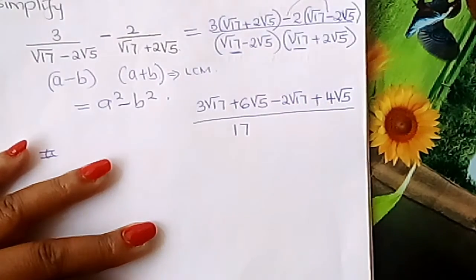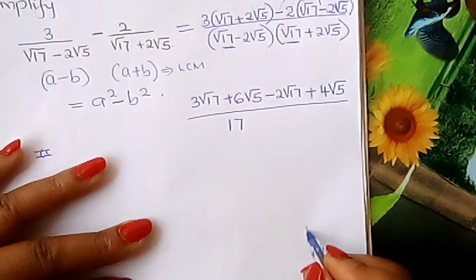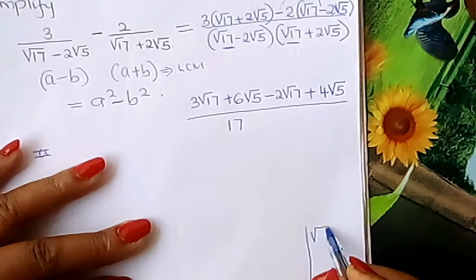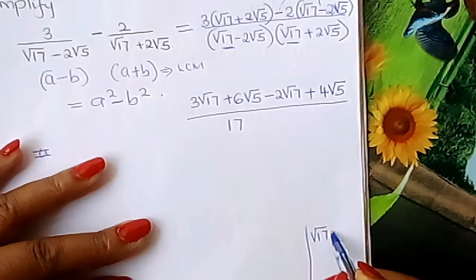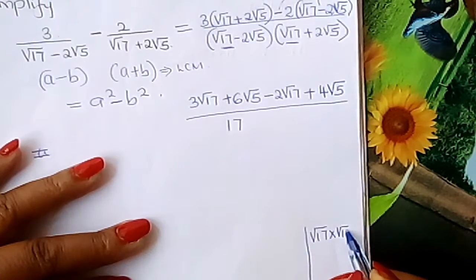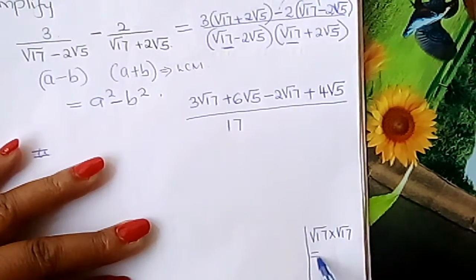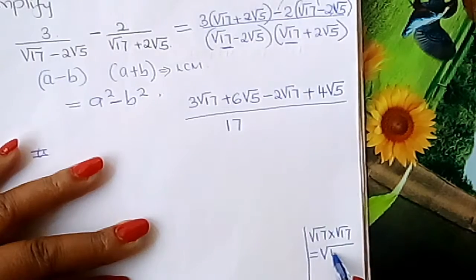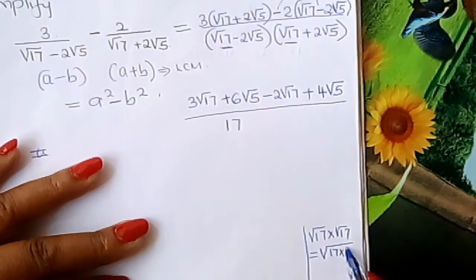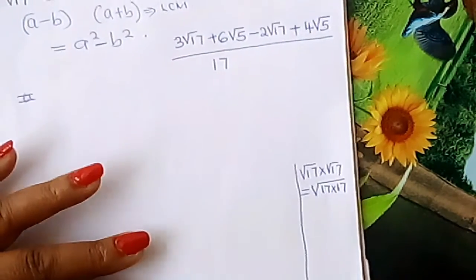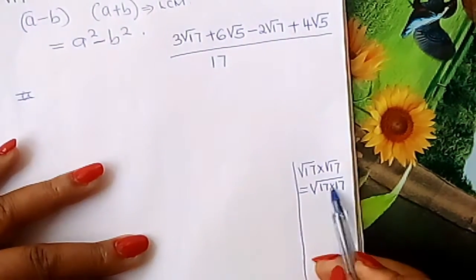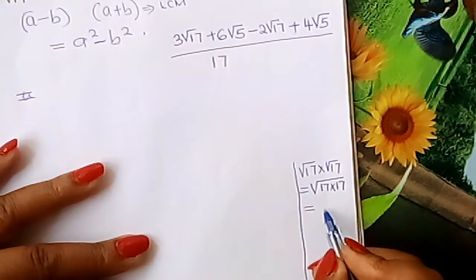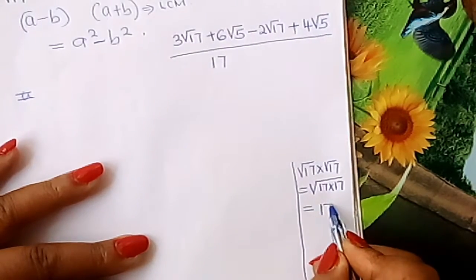So root 17 times root 17 gives you 17. Root 17 times root 17 is the same as placing them under the same root, giving root of 17 times 17, which equals 17. Then you put minus — just like in the identity.